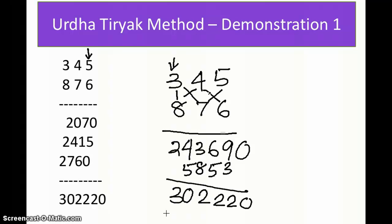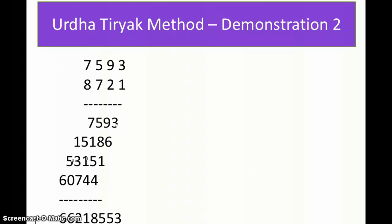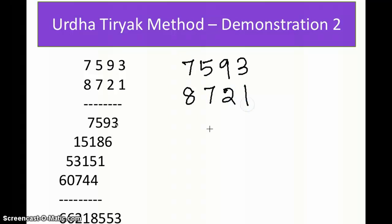In the initial stage it might look very difficult because you have to do a lot of additions, but once you practice this method and multiply higher numbers it's going to be really easy. Let me show you one more demonstration using 4-digit numbers. So here we have 7593 and 8721. We will start multiplication from the left side: 7 × 8 is 56.